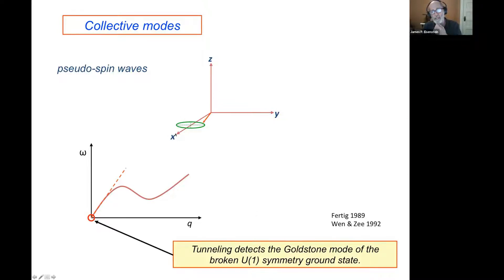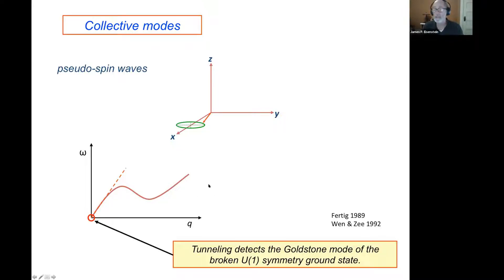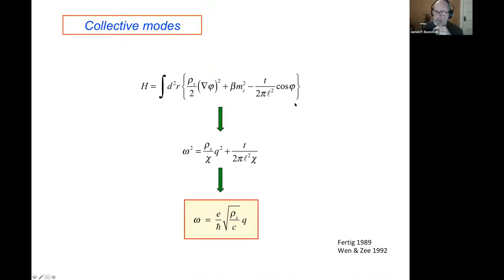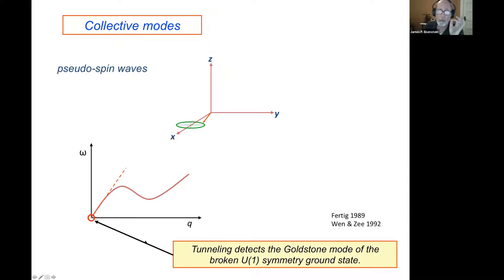The mode velocity is determined by the spin stiffness and the capacitance between the layers. It's a cartoon where the pseudospin oscillates primarily in the x-y plane with small deviations out of the plane due to the β m_z² term. There's linear dispersion, and Hartree-Fock theory predicts a roton minimum not seen in numerical calculations or experiment. Tunneling — because the tunneling term explicitly breaks the symmetry, making the mode ever so slightly gapped at small wave vector — provides us a tool to see this spectrum.